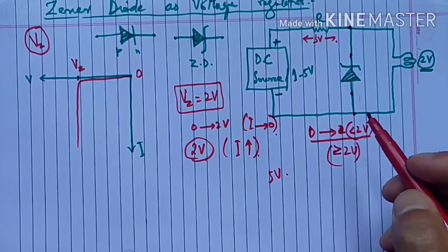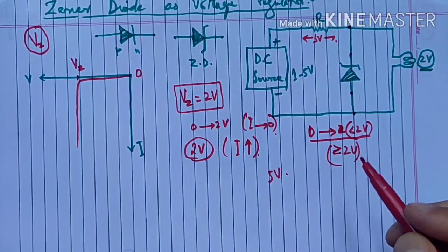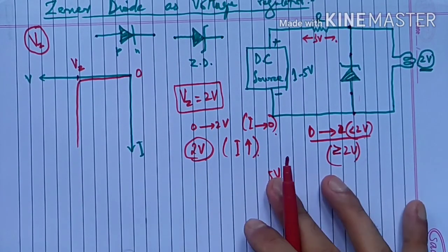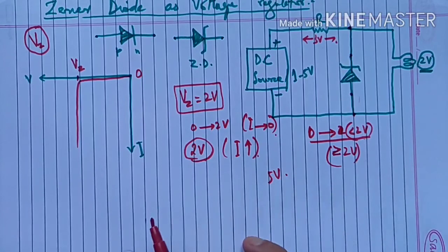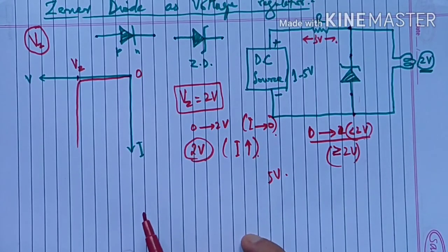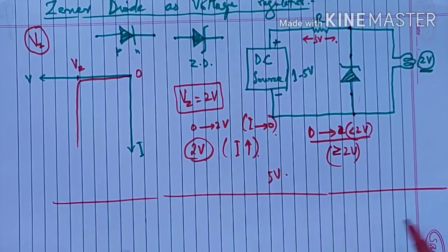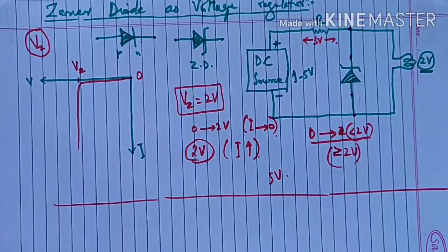तो यह अपने आप adjust करता है current का value - जो बचेगा potential difference उसका drop होगा across this resistor, और LED के across, load के across जो voltage है वो constant रहेगा। तो इस तरह से हम use कर सकते हैं zener diode को as voltage regulator। This is very important property and application of zener diode that it can be used to regulate the voltage in a circuit, in the output. Thank you.